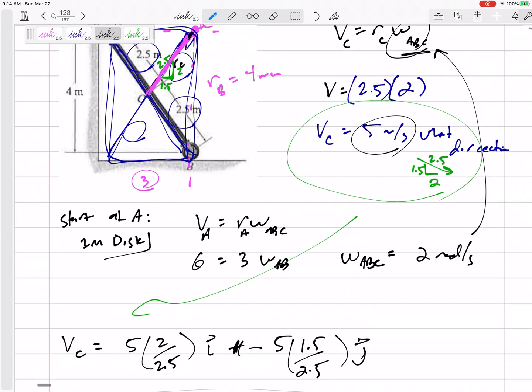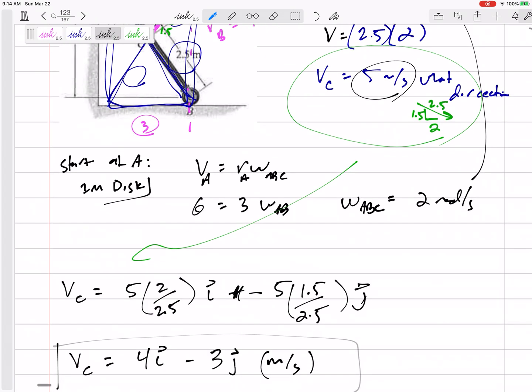But so you see, the first thing I need to do was look at the imaginary disc, find the instantaneous center to get this angular velocity, right? Using that instantaneous center is a good way to find the angular velocity for many of these problems.